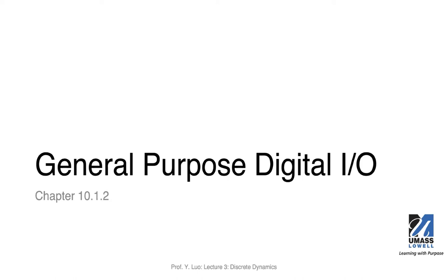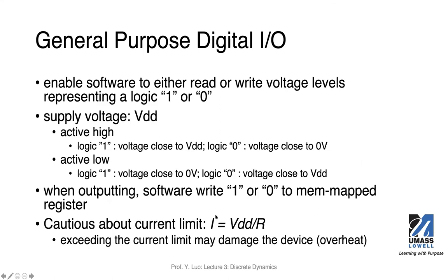Let's talk about general purpose I/O and digital I/O. In the textbook, there's one section in chapter 10, section 10.1.2, that talks about general purpose I/O. I want to move that content to here today to help you understand some of the concepts you'll use in the first lab. General purpose I/O, or GPIO, enables software to either read or write digital voltages representing a logic one or zero.